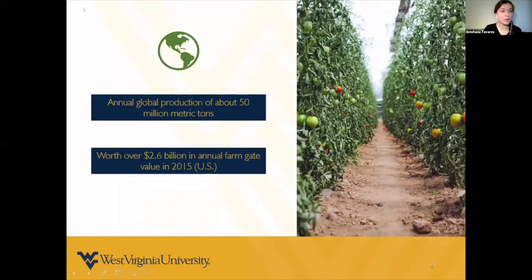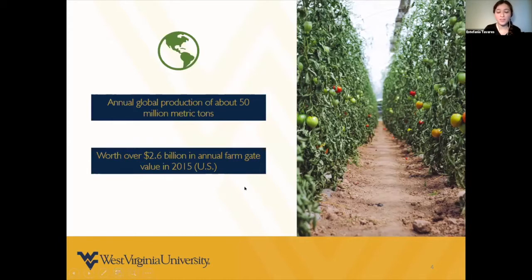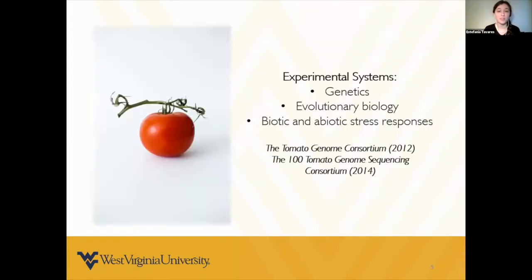Tomato is a really important crop around the world with an annual production of 1.5 million metric tons. Just in the United States, the market value for this crop is around 2.6 billion in annual farm gate value, reported in 2015. But tomato is not only used for food — it is also a great model for studying genetics, evolutionary biology, and abiotic stress responses. Thanks to the creation of the Tomato Genome Consortium in 2012 and the 100 Tomato Genome Sequencing Consortium in 2014, a lot of research has been done in this regard.